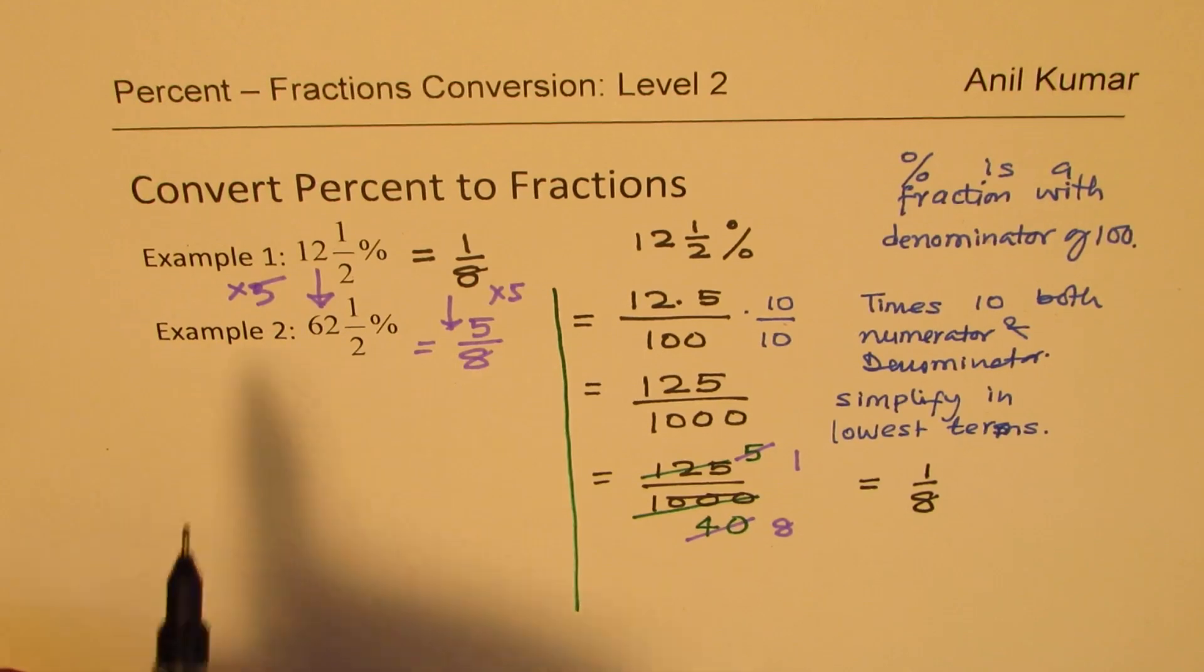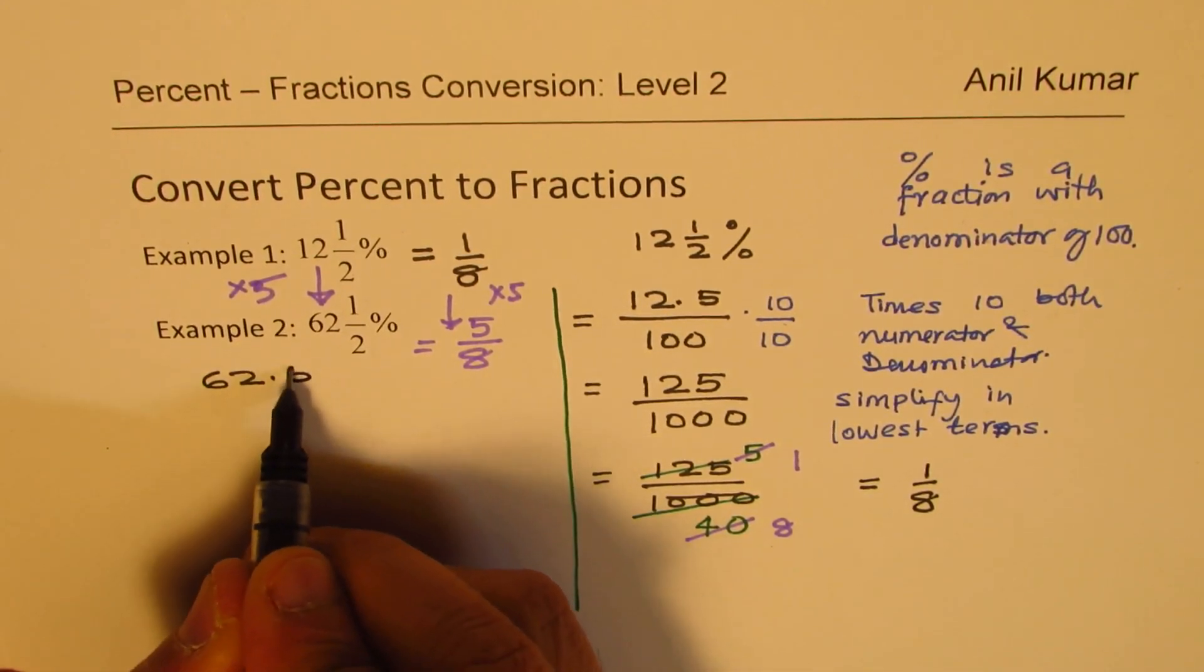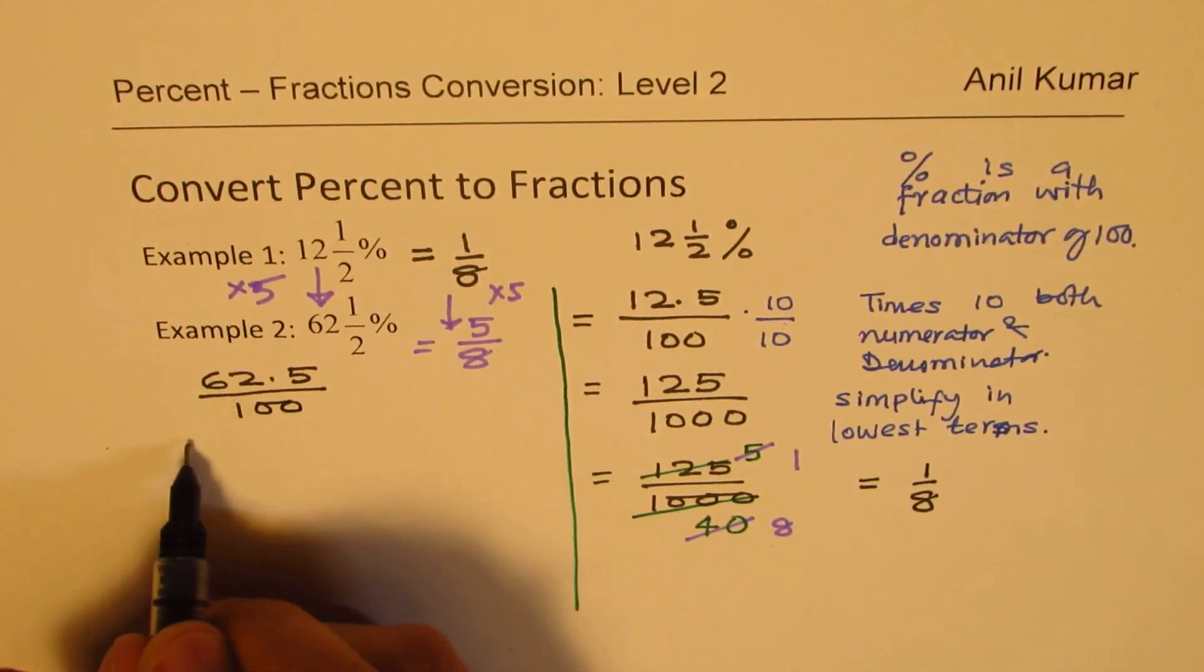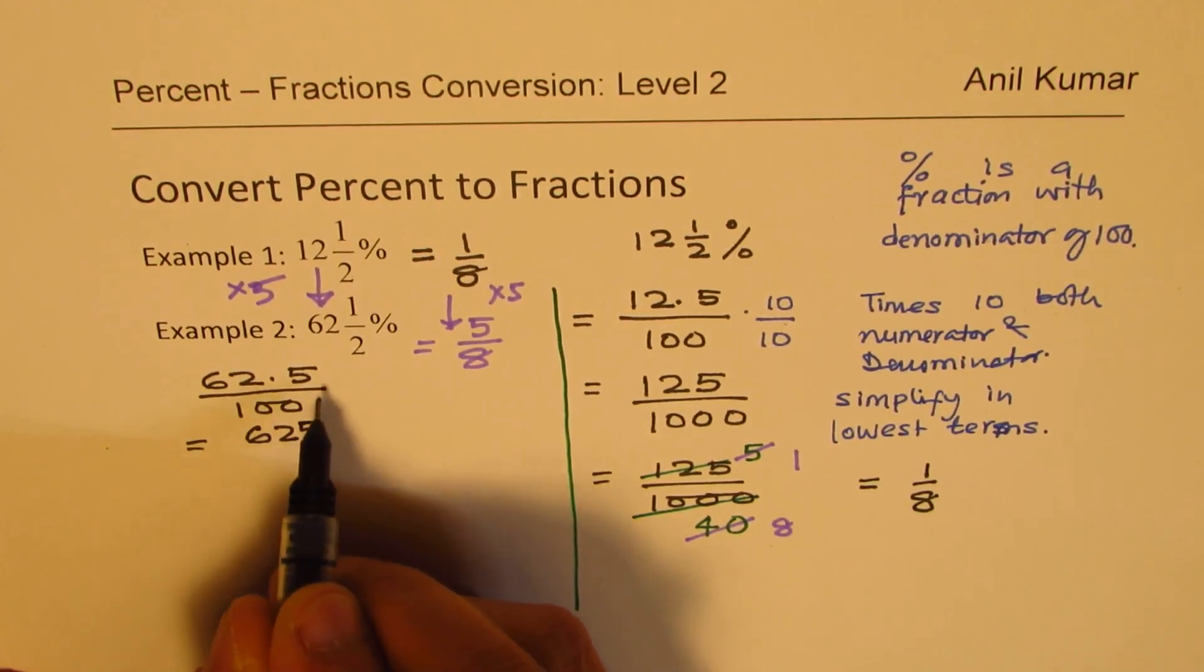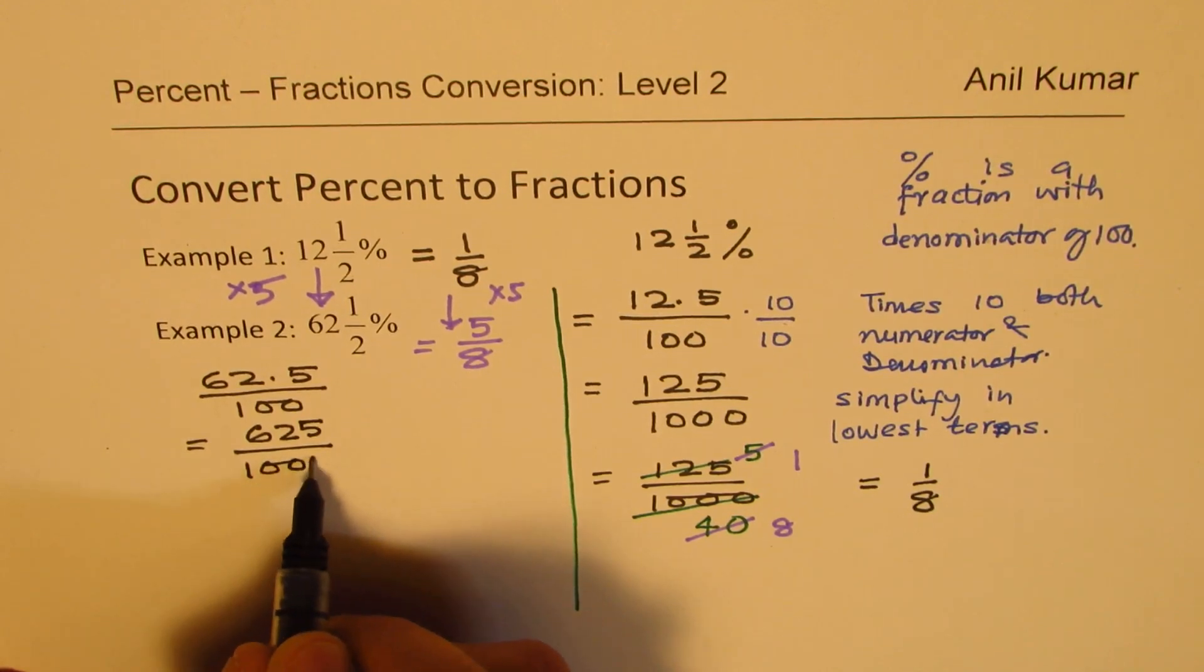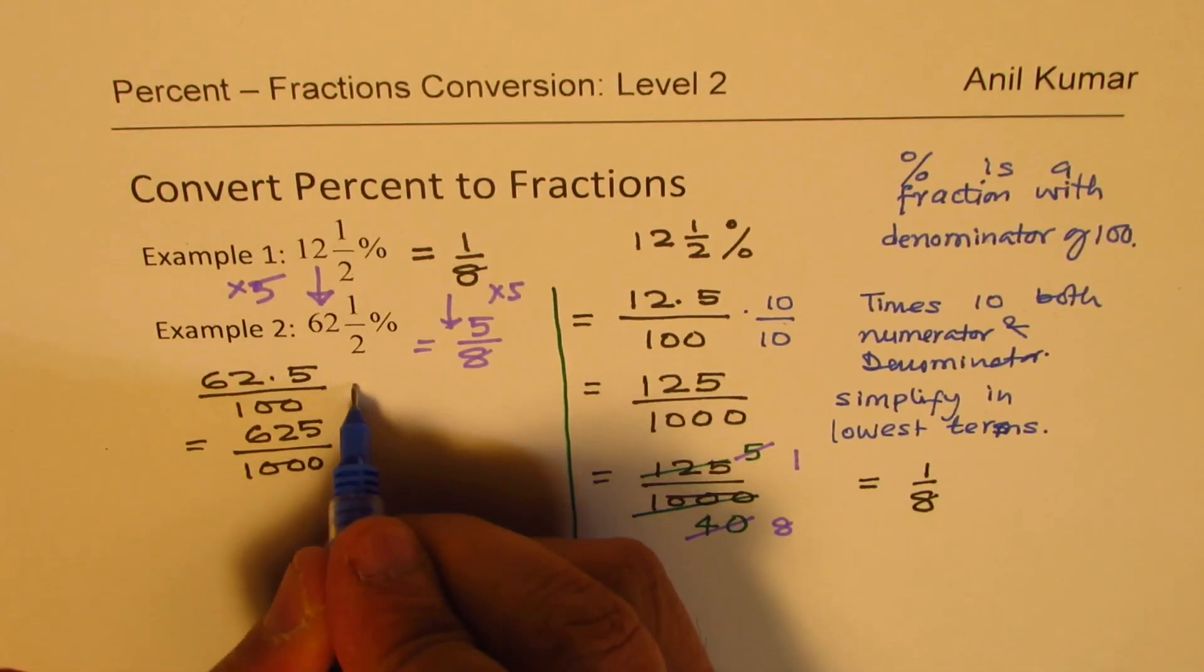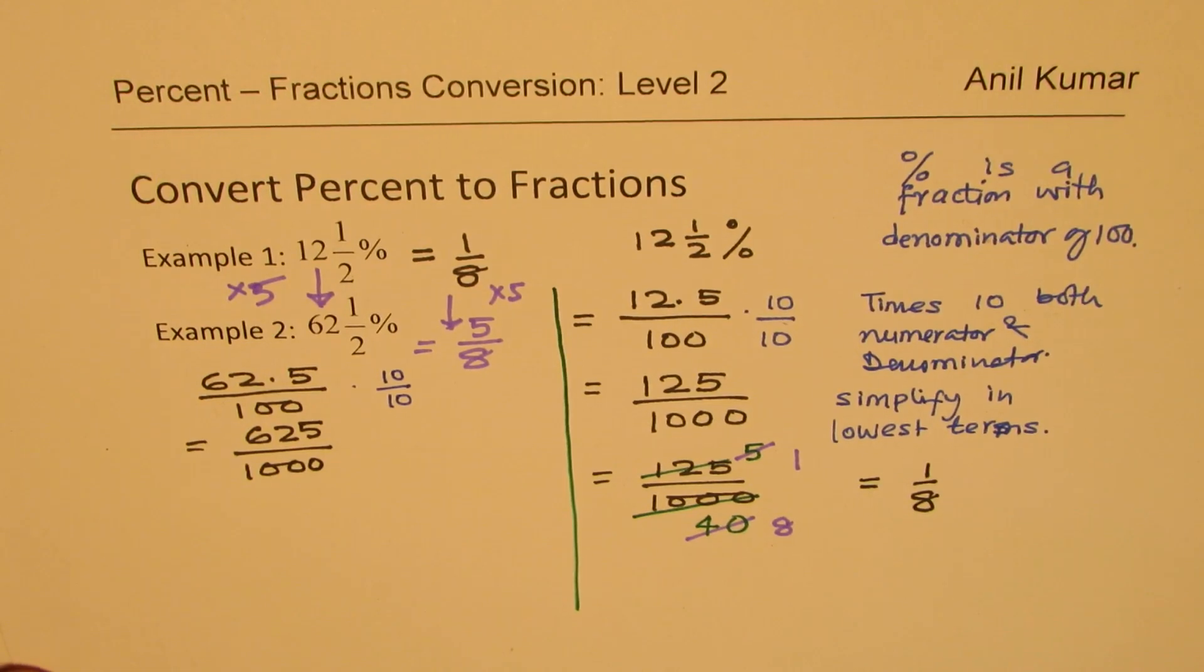62 and a half means I could write this as 62.5. Percent means I have to divide by 100. Now, to get rid of decimal, I'll write this as 62 and then 5, times 10 that is. And here I will get 100 times 10 as 1000. Perfect. So first step, as I did earlier, we multiplied both by 10 and got our result.